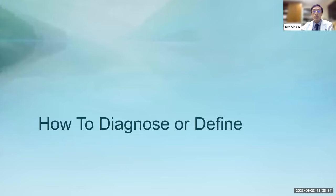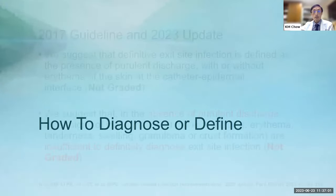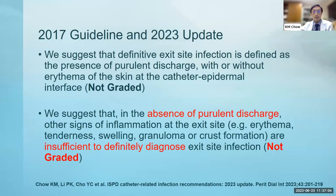For the 2017 and 2023 guidelines, we suggest that definite exit site infection is defined as the presence of purulent discharge, with or without erythema at the skin-catheter interface. In the 2023 update, we specifically state that in the absence of purulent discharge, other signs of inflammation — such as erythema, tenderness, swelling, granuloma, or crust formation — are not sufficient to definitively diagnose exit site infection. The presence of purulent discharge is required to make a definite diagnosis of exit site infection.